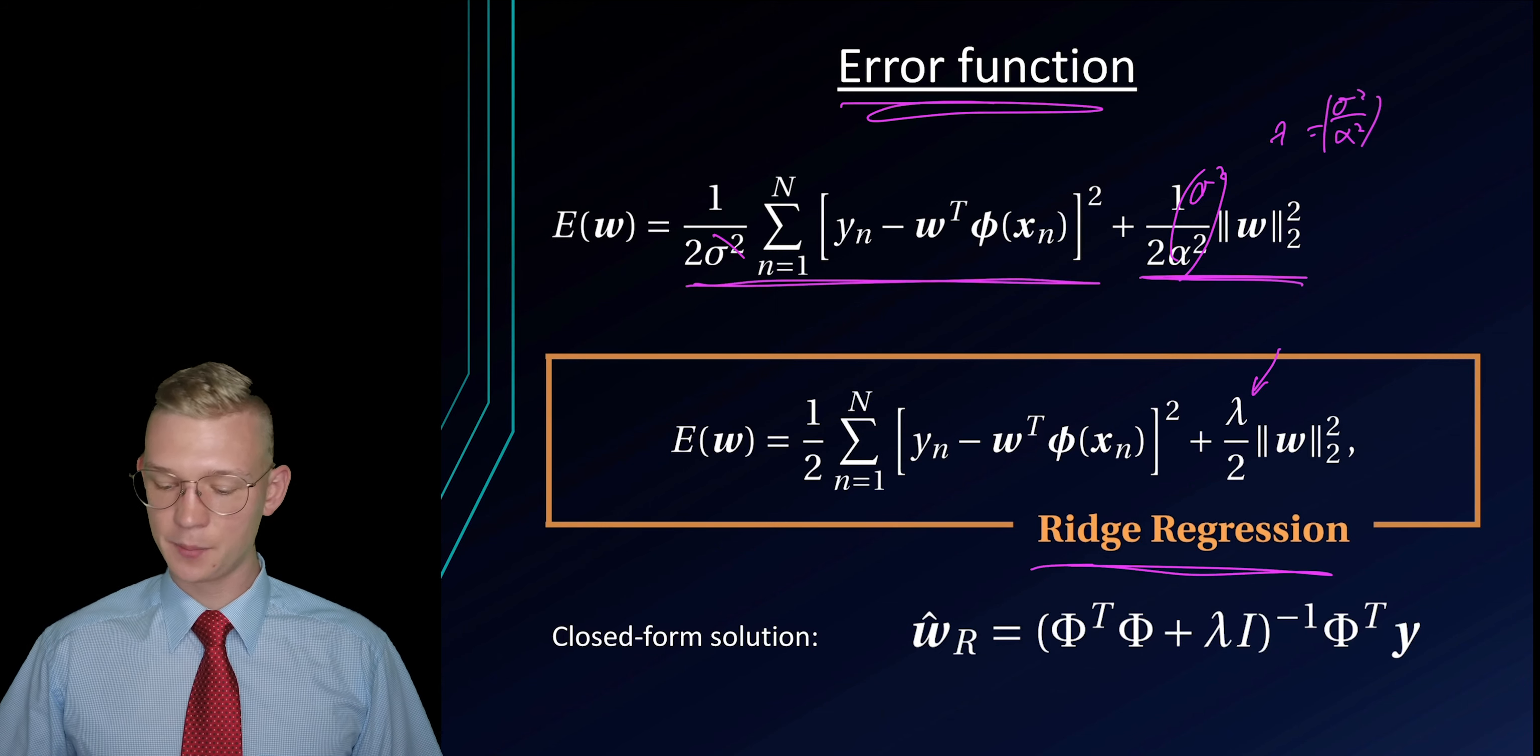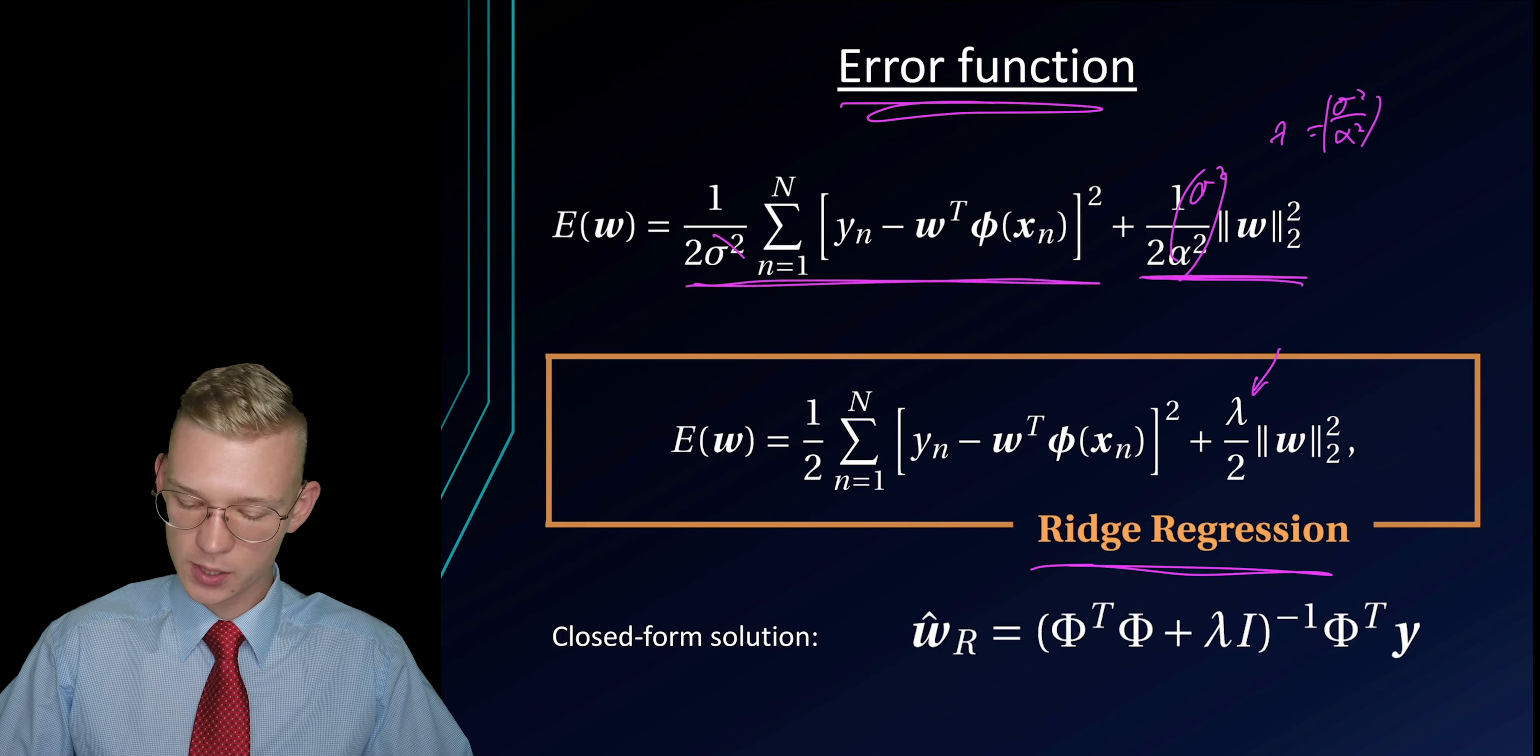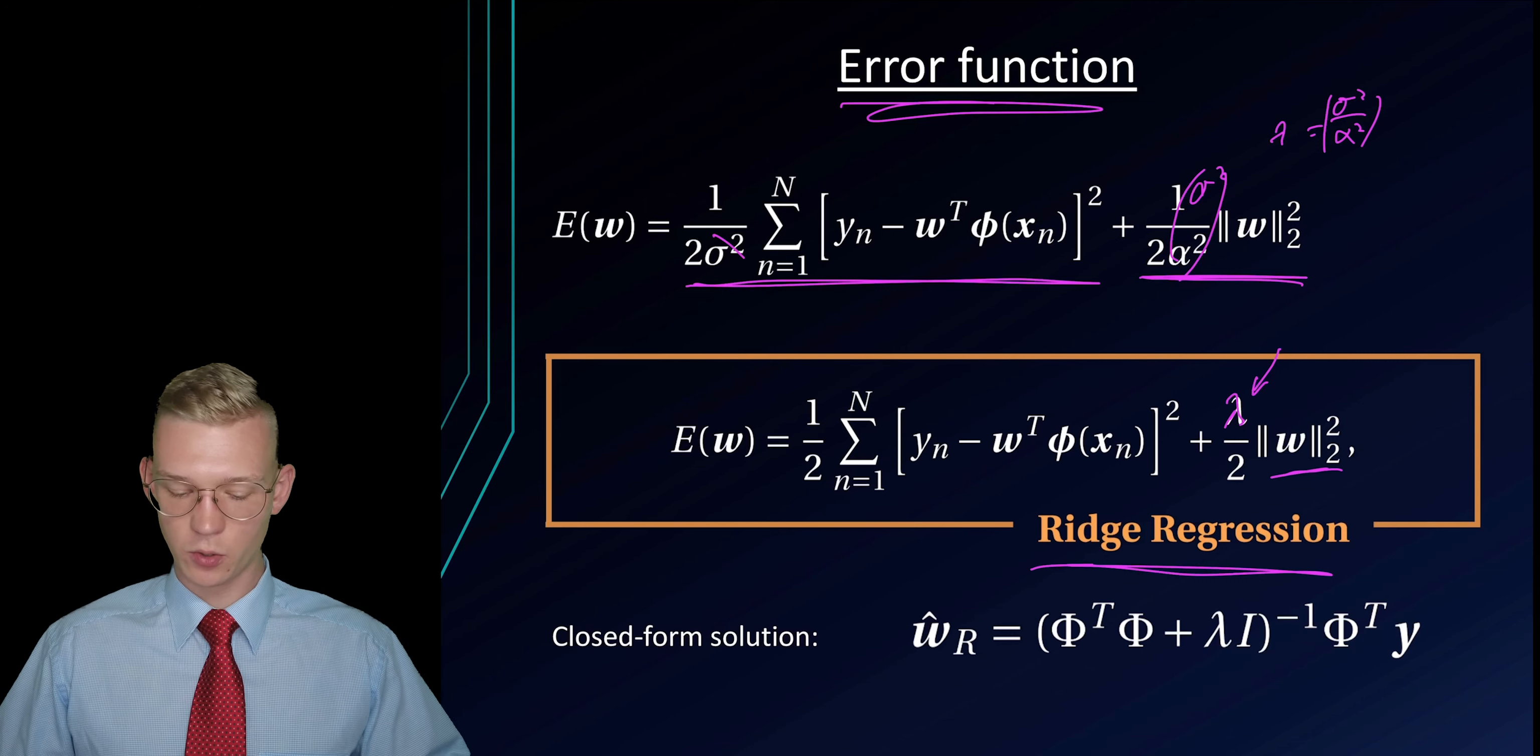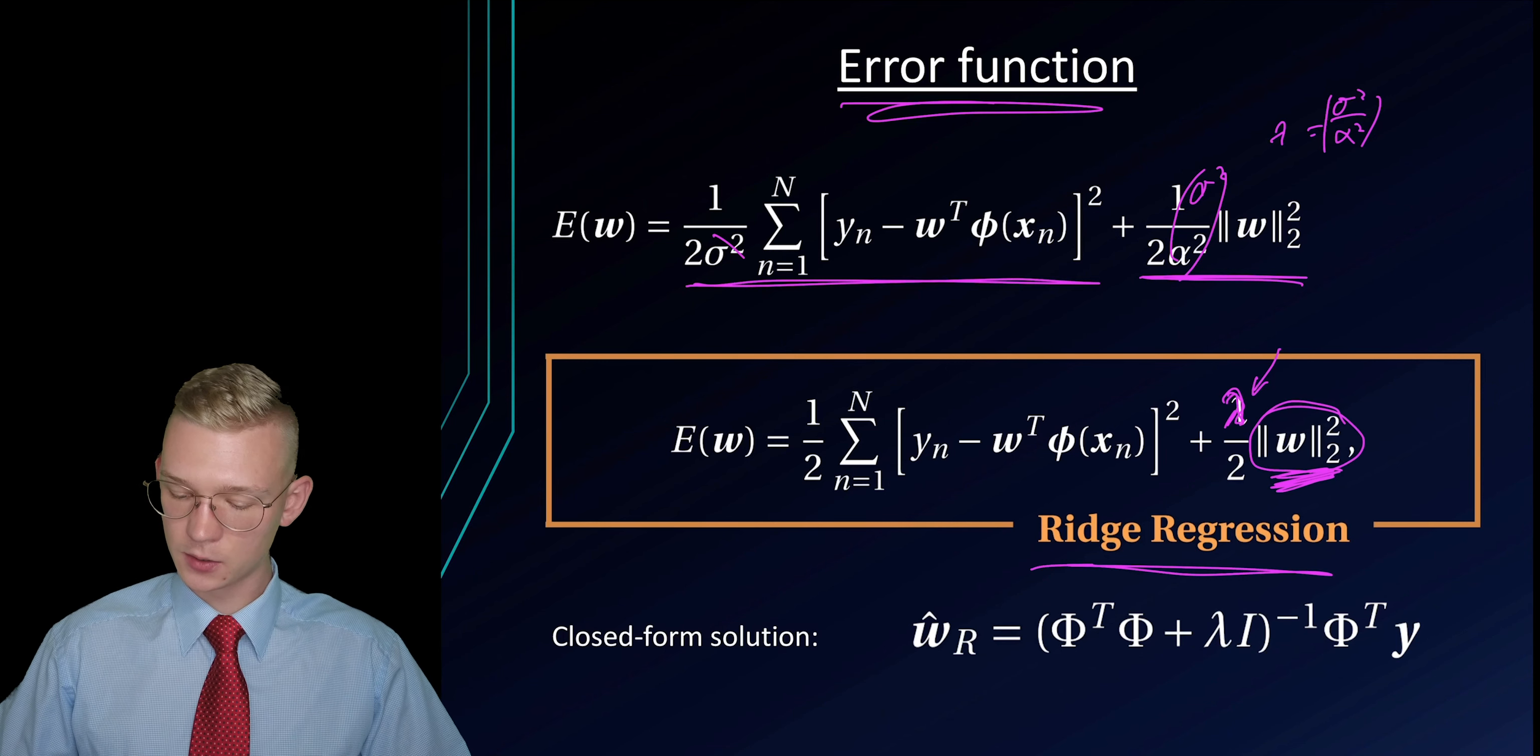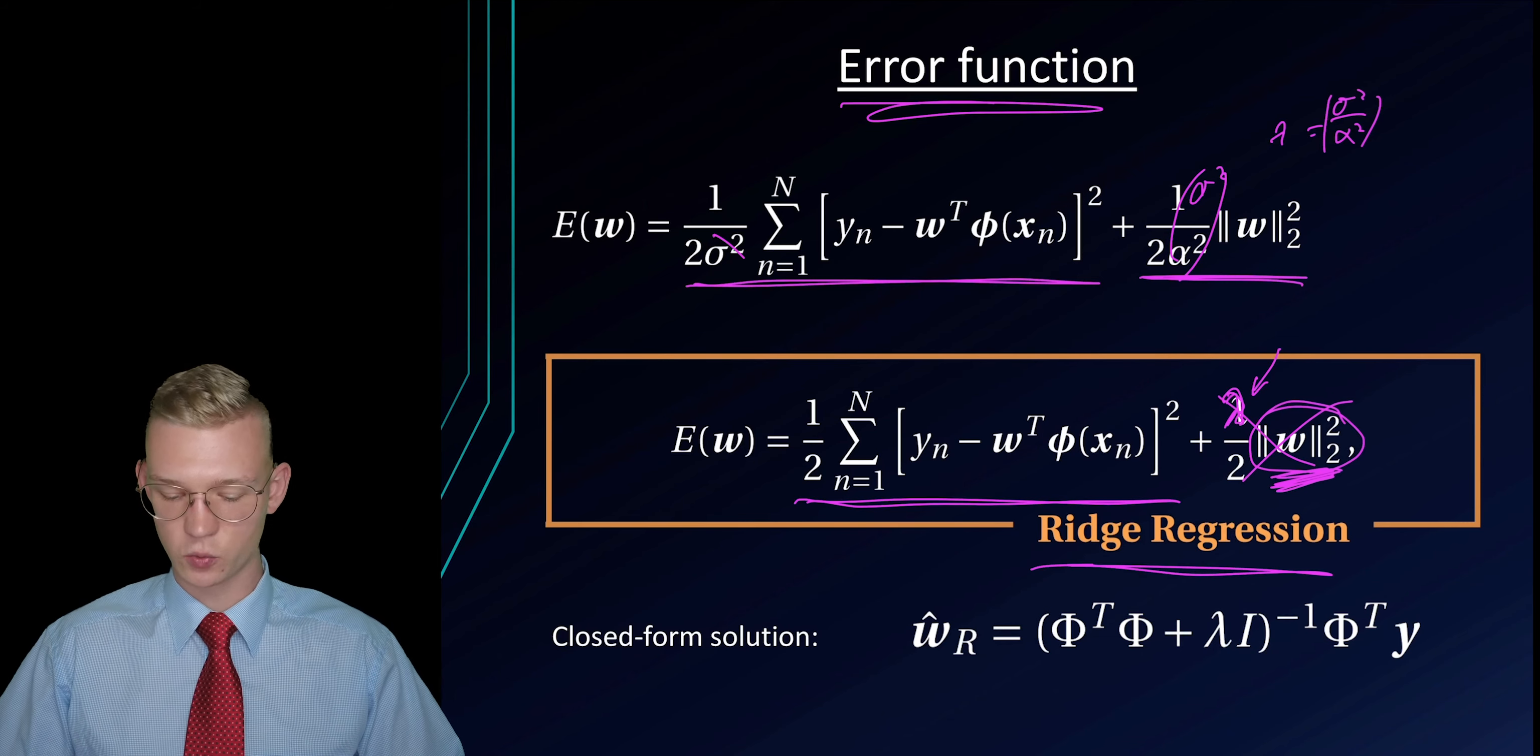How does this lambda influence our parameters? If we choose this lambda to be very high, we will push our parameters more and more to zero because we want to minimize this term. If this lambda is very large, it will give a large effect to those parameters. But if lambda is equal to zero, we are just again at our least square solution.